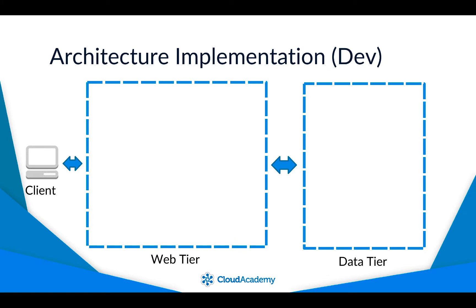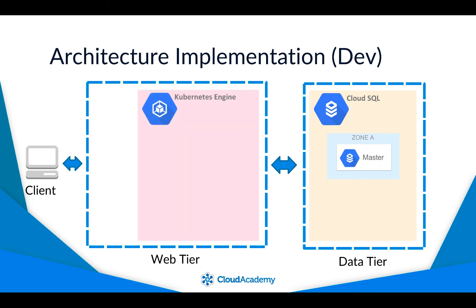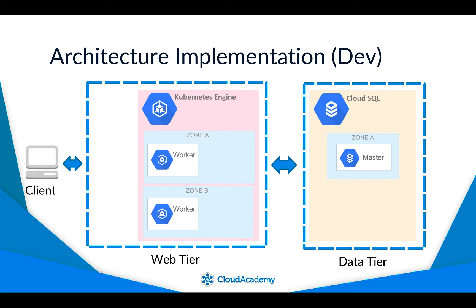Let's start by inspecting the data tier. The data tier uses Cloud SQL, which includes support for managed MySQL databases. There is one instance that runs MySQL version 5.7. For the web tier, a Google Kubernetes Engine, or GKE, cluster is used. GKE uses containers to run the application. There are two worker nodes in the cluster, spread across two zones.